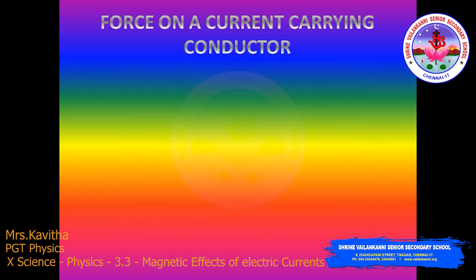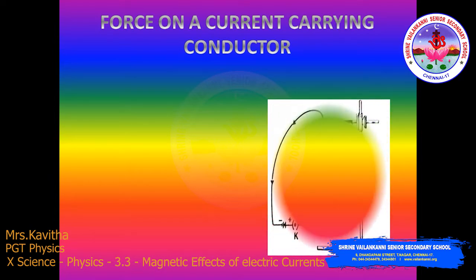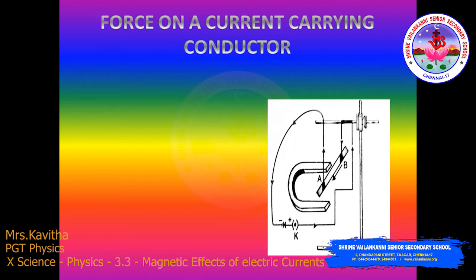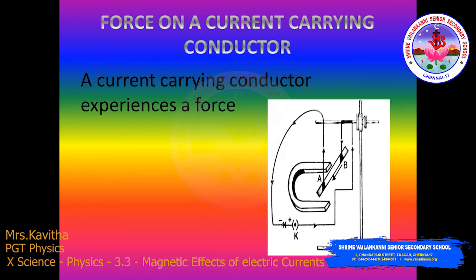Next, we are going to learn about force on a current-carrying conductor in a magnetic field. We have learnt that an electric current flowing through a conductor produces a magnetic field. Electric current is nothing but a flow of electrons — that means the motion of electrons through a conductor produces a magnetic field. If this current-carrying conductor is now placed in a magnetic field, then it will experience a force.